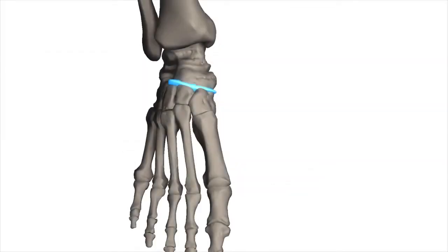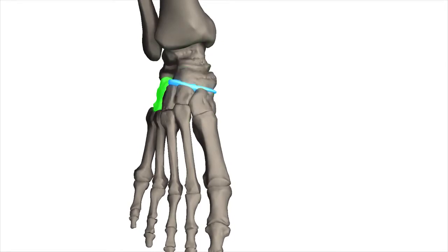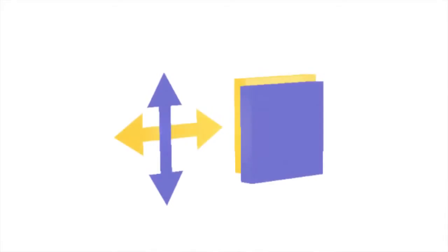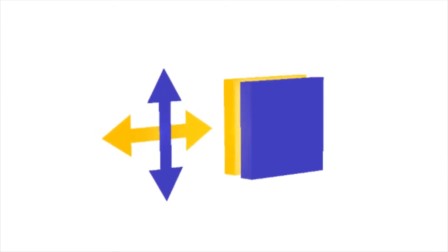The intertarsal joint is between the navicular and the three cuneiforms — medial, intermediate, and lateral — as well as the cuboid bones. The overall movement of the foot structure is a gliding motion.